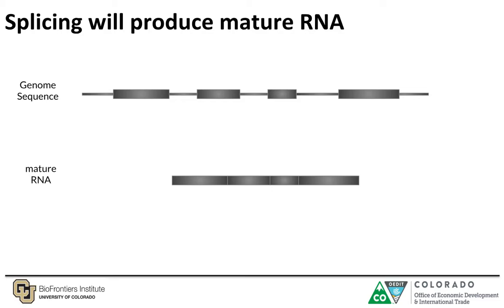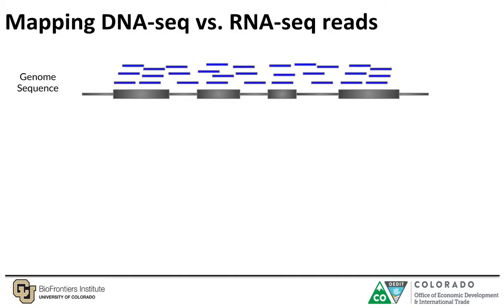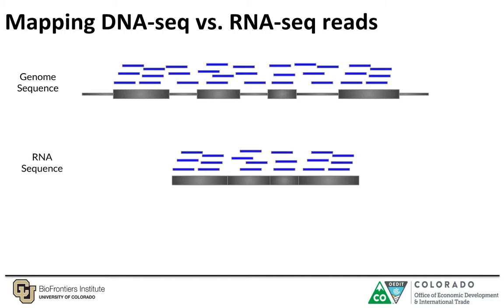Splicing is a form of RNA editing that removes introns and gives rise to mature RNAs. So if you have DNA sequences and you want to map them back to the genome, these reads will map back to both intron regions and exon regions. However, if you have RNA-seq reads and you map them back to the genome, you will only have reads mapping to exon regions.